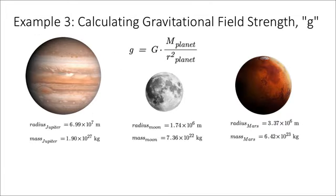Alright, we're going to do some examples now where we calculate the gravitational field strength or little g for different planets. And so we'll actually look at Jupiter, the moon, which is not a planet but it's a celestial body, and Mars.